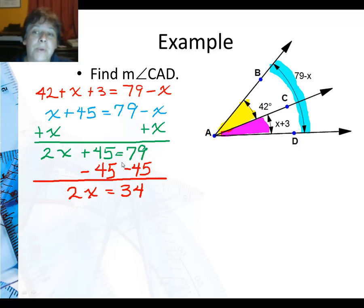Then I am going to subtract 45 from both sides because I want the x's all together on one side. So now I have 2x equals 34. Then I just really want to know how big is 1x, and I divide both sides by 2 and I get x equals 17.